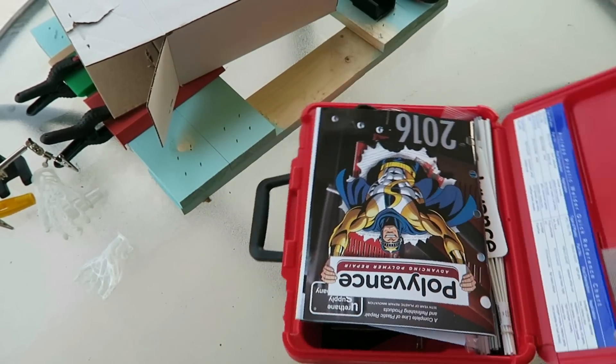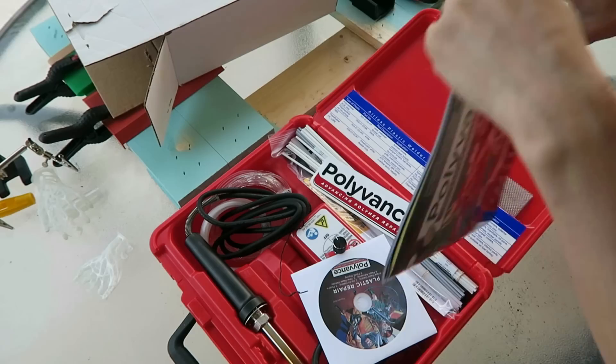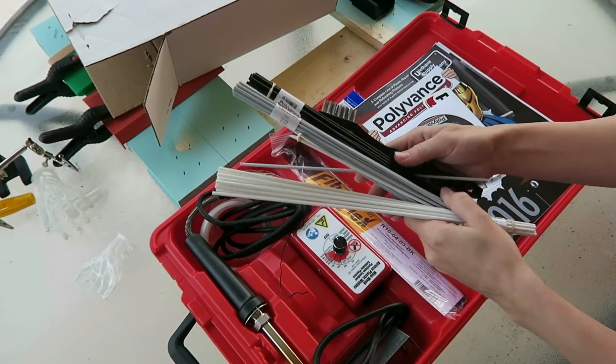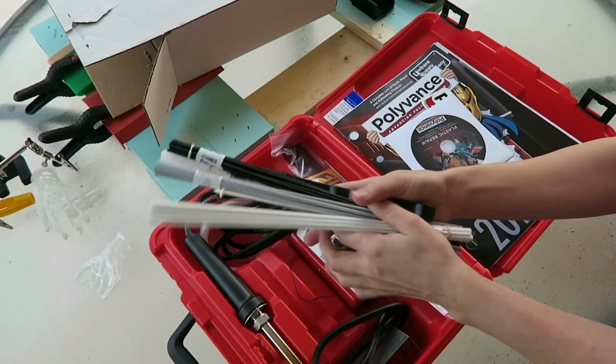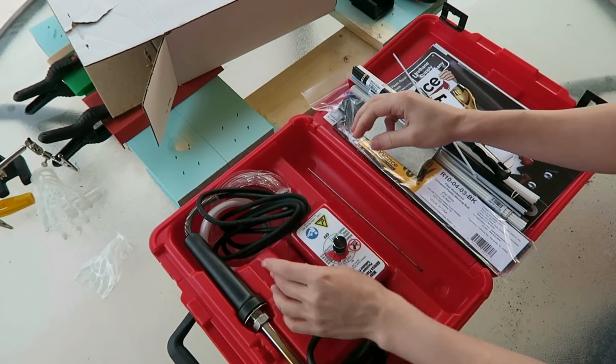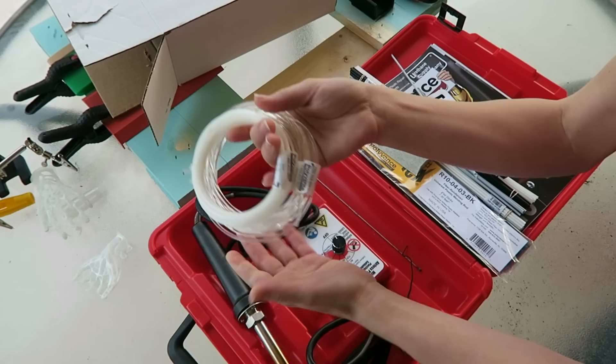So in this sturdy case, we have an instruction manual, a DVD with detailed video instructions, and the ubiquitous branded bumper sticker. There is a selection of plastic welding rods, including FiberFlex, which supposedly bonds to most plastics. Also a wire brush for cleaning the welding tip.